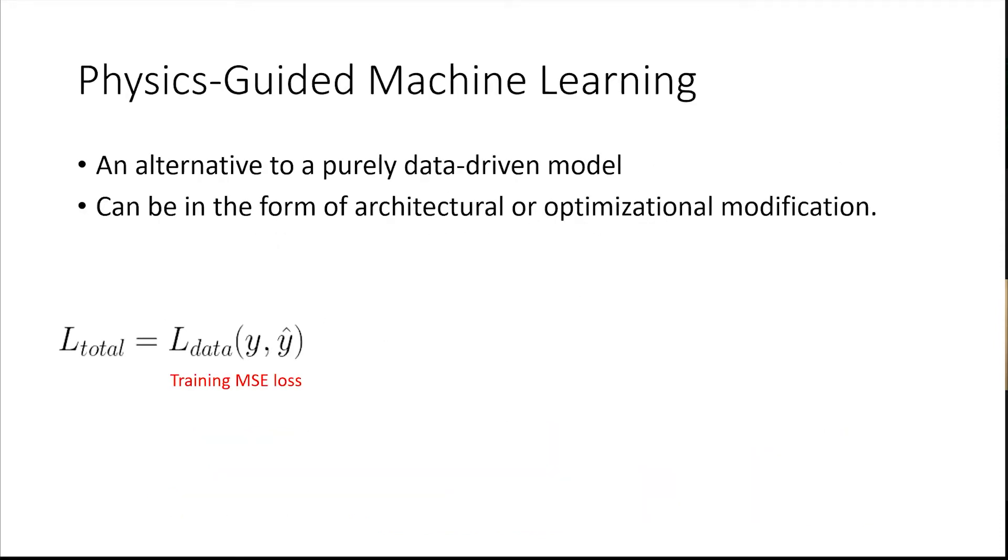In recent years it has been shown that adding what is called a physics loss term can help improve a neural network's accuracy and ability to generalize. This paradigm is called physics guided machine learning and it can be done by making modification to the architecture or by modifying the optimization process. In this work we focus on the latter case.